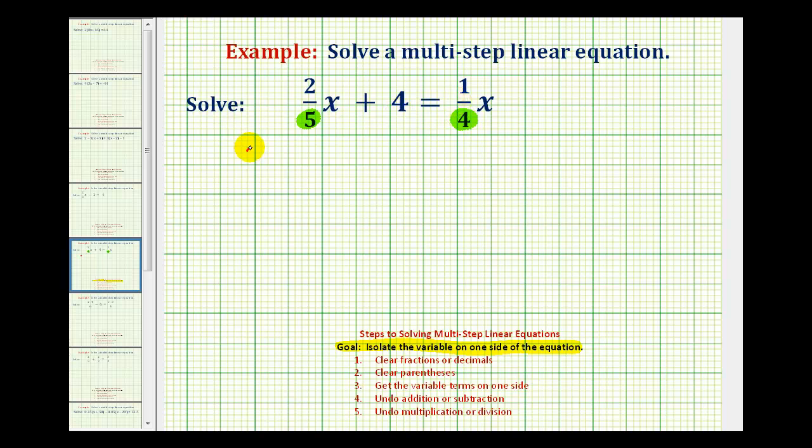So we'll have twenty times two-fifths x plus twenty times four. This must equal twenty times one-fourth x.